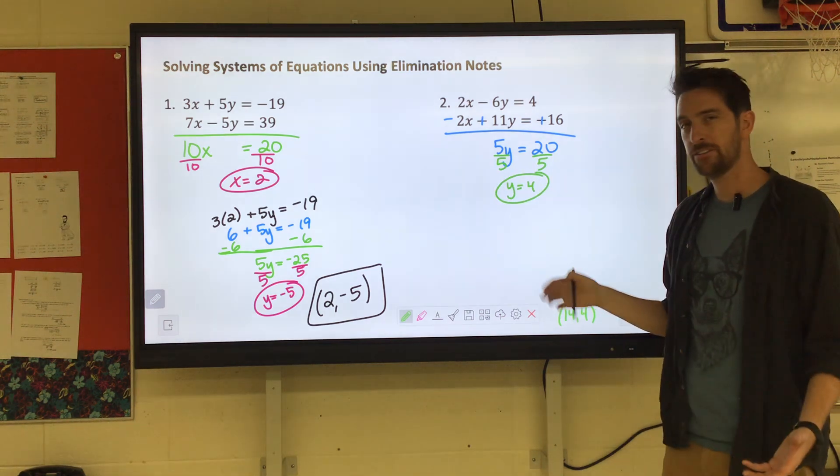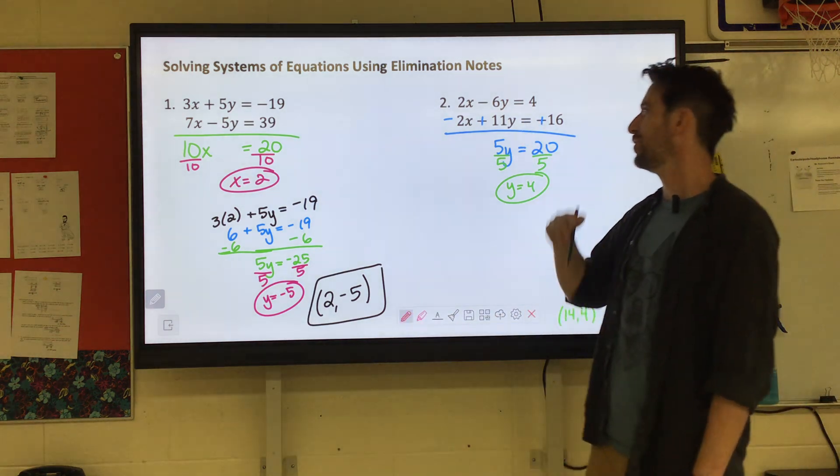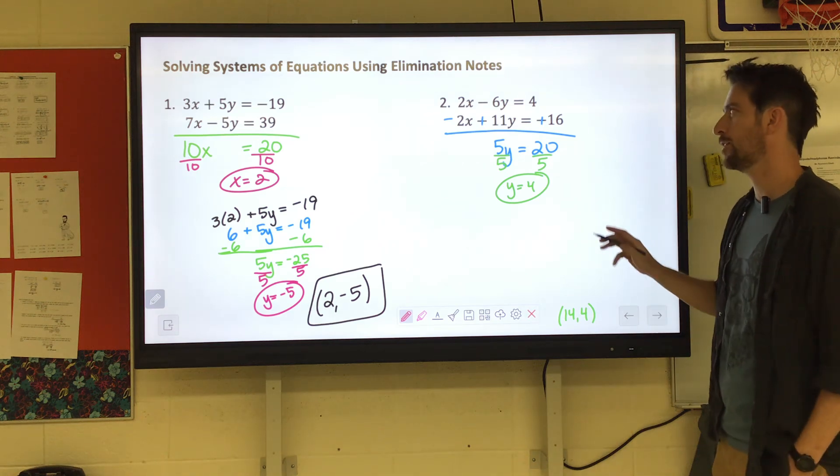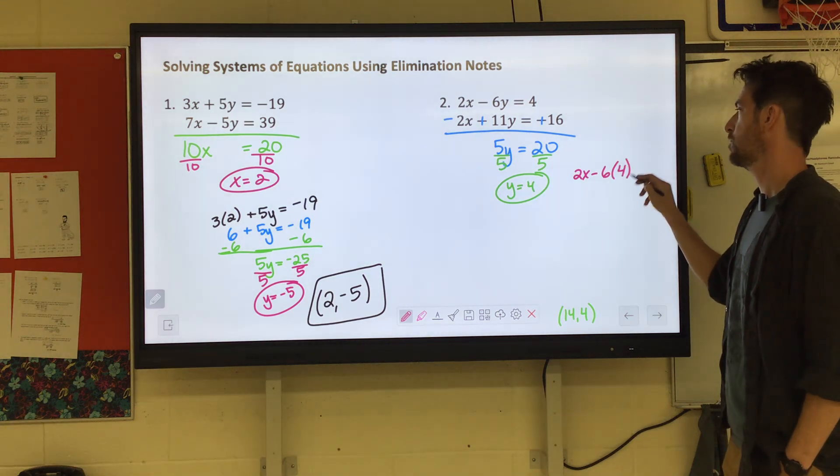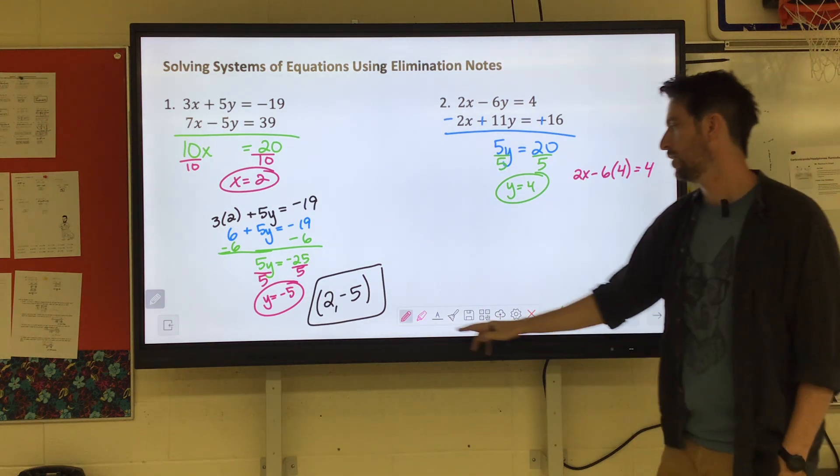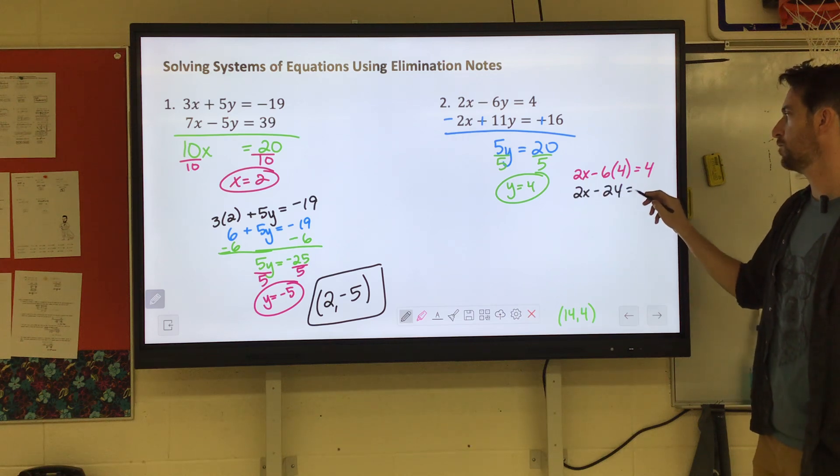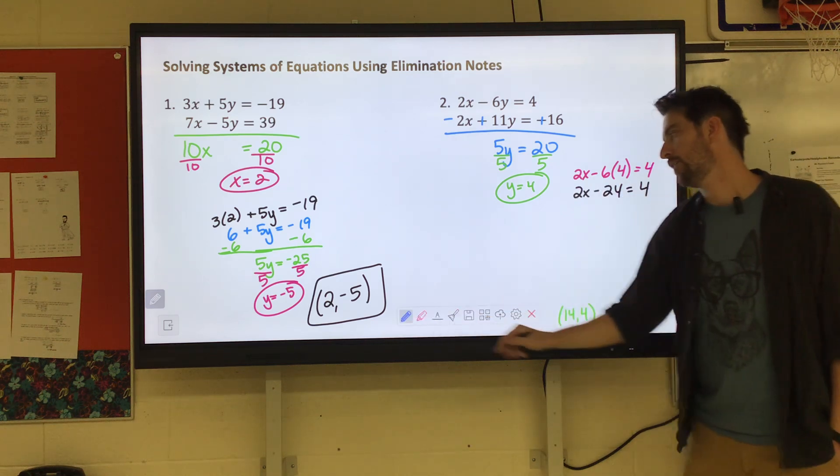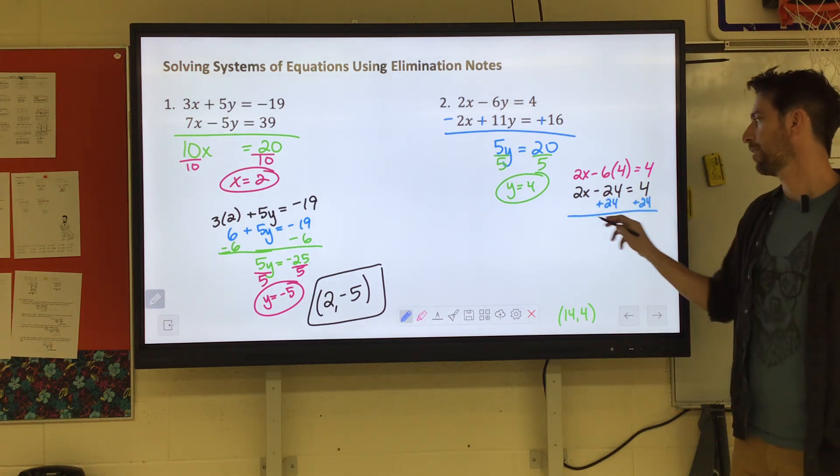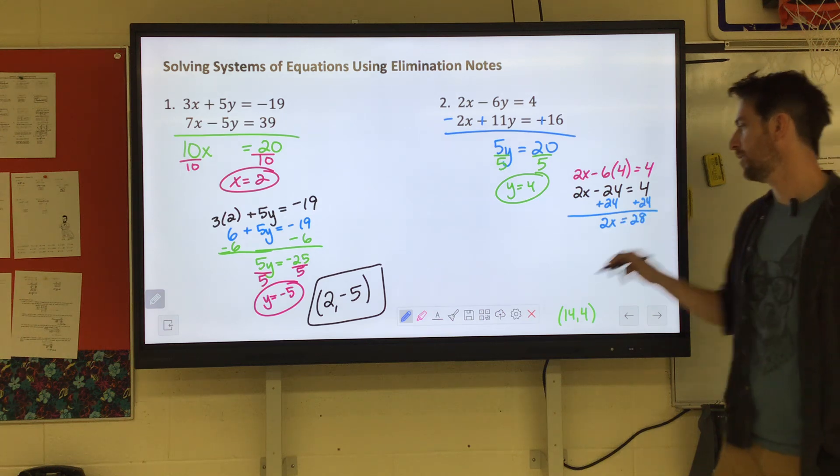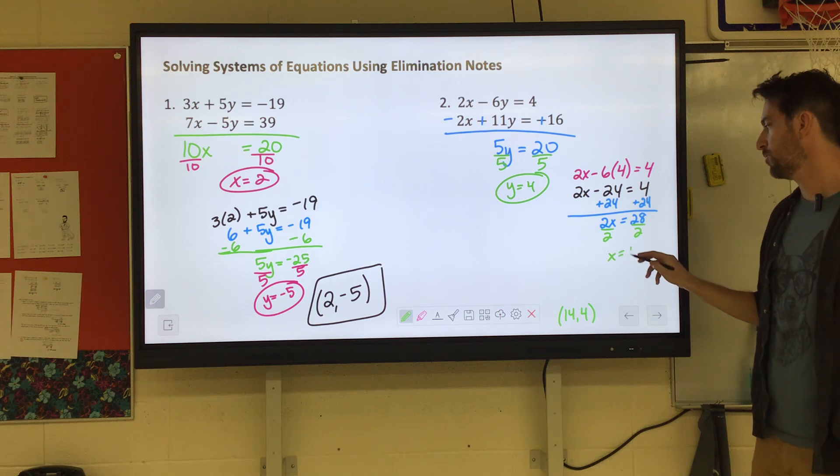We have to figure out X. You can use the original two equations or you can use the one after we changed it. I'm going to go with the original number one equation, the 2X minus 6Y. 2X minus 6 times 4 equals 4. Now 6 times 4 is 24. So 2X minus 24 equals 4. You add the 24 to the other side. 2X equals 28. And then divide by 2. X equals 14.